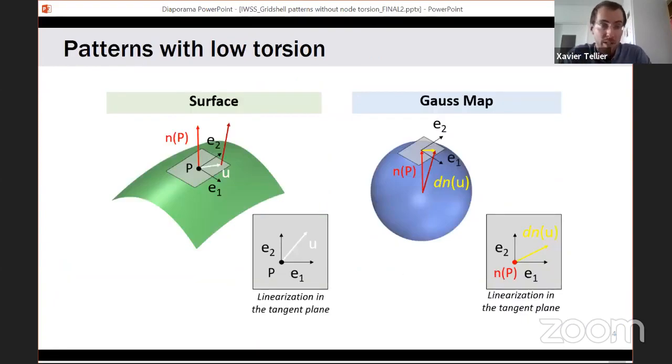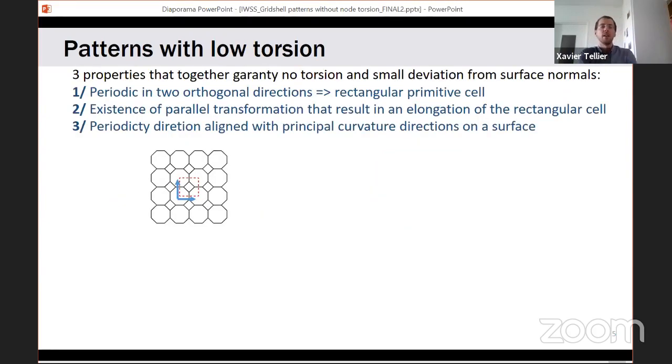The starting point is differential geometry. Basically we look at what happens to the normal vector, for example here the normal at p, as you move away on a surface. We linearize the problem in the neighborhood of a point using the Gauss map, a window of differential geometry. I won't go more into the details of this. I will just show you the results of using these methods. We came up with three properties that are sufficient to guarantee that a pattern for a grid shell can have no torsion and with a very limited deviation of the section with the surface normals.